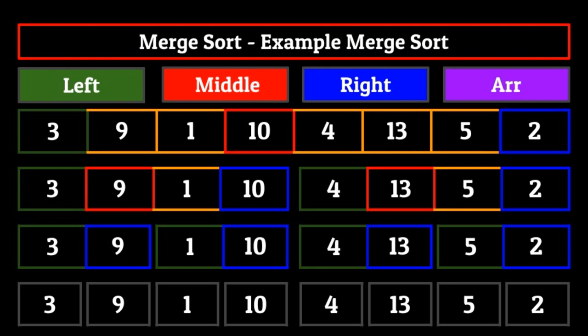Now the cool thing about these merge sort calls is that the left and right indexes are equal to each other — you can tell because of the grayish color. Why gray? Well, if you mix green and blue, you get gray. Since the right index is now not greater than the left index — it's equal to it — we've now reached our base case and can exit the loop and begin merging.